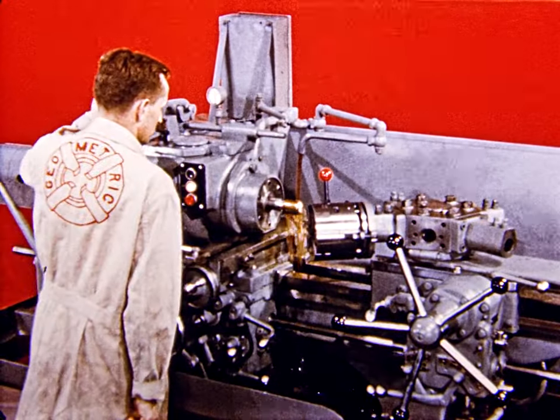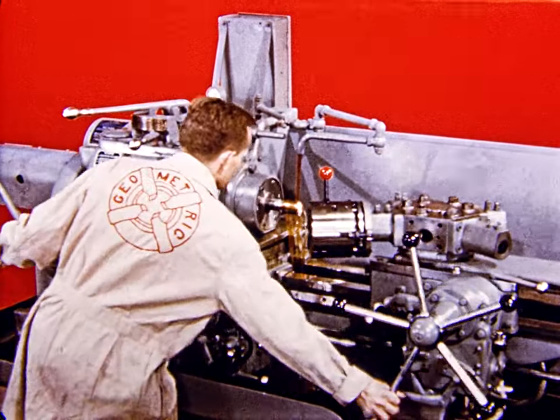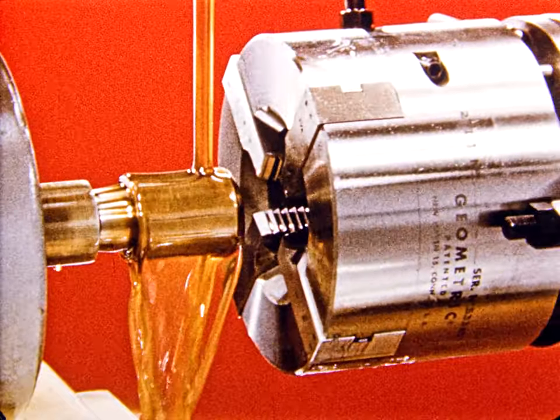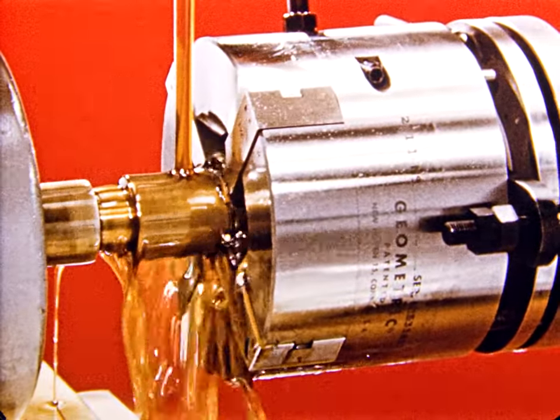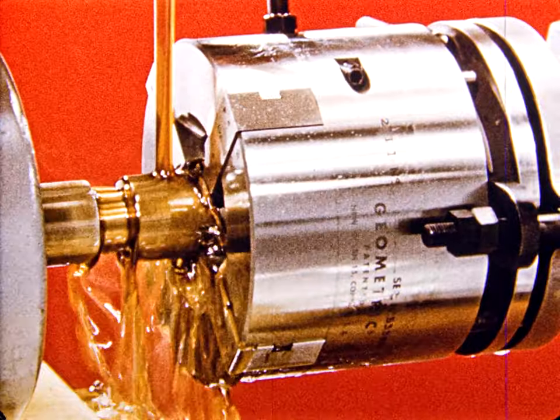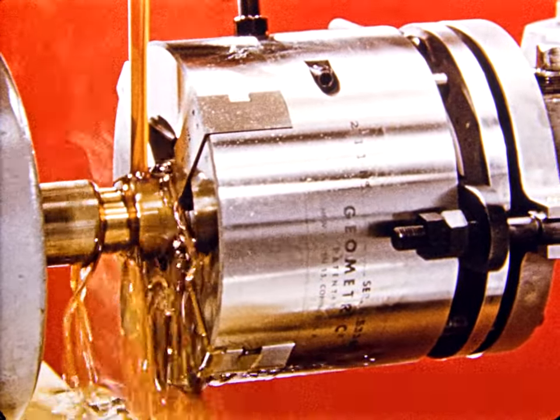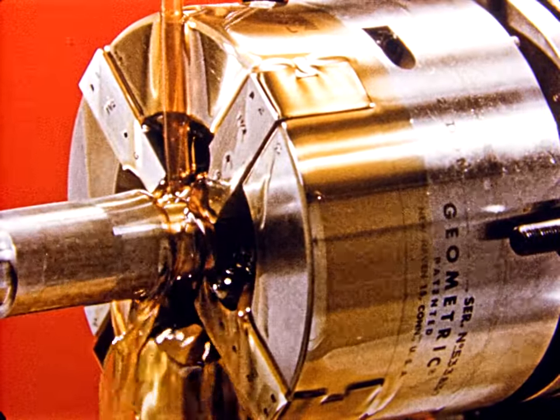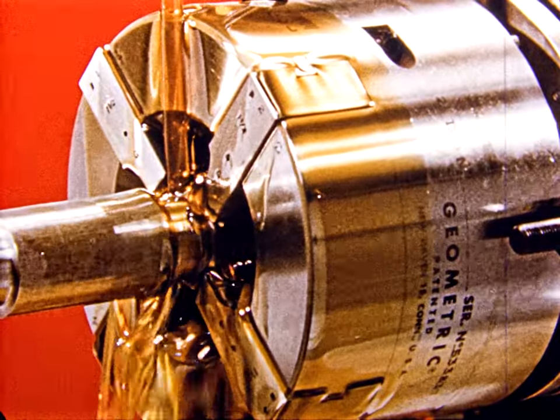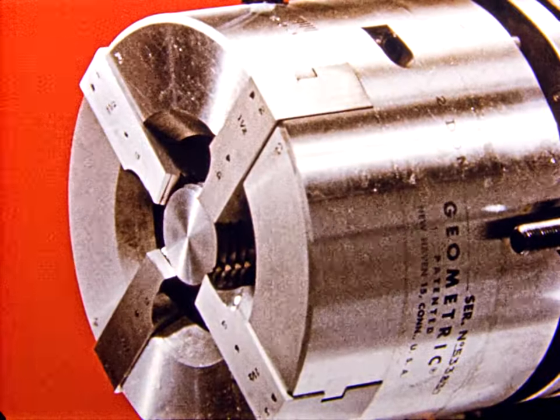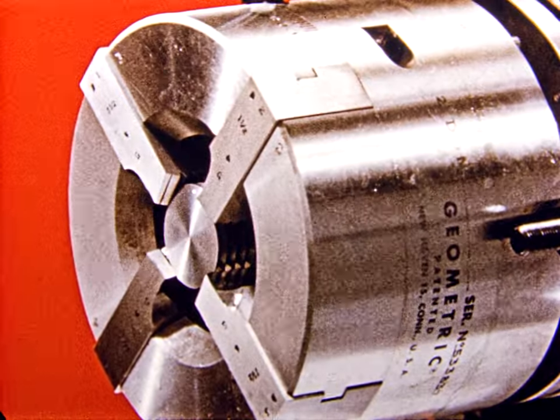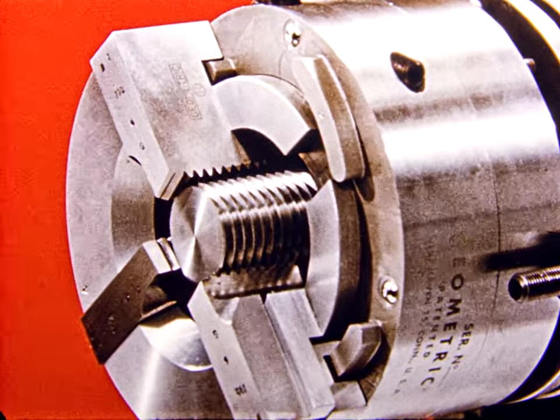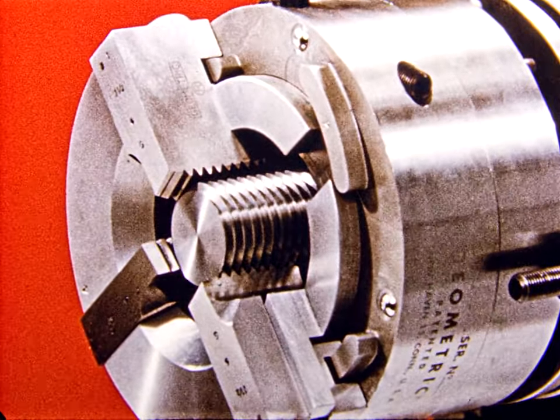Now let's see exactly how this self-opening die head operates. In this special demonstration, we can see the rotating stock as it is engaged by the chasers of the advancing die head. When a predetermined length of thread has been cut on the stock, longitudinal travel is stopped. The stock continues to rotate, however, and since it is rotating and the newly cut threads are engaged with the chaser teeth, the stock exerts a pull on the die head which soon grows strong enough to actuate the opening mechanism and the chasers snap back into the skeleton away from the stock as shown here in slow motion.